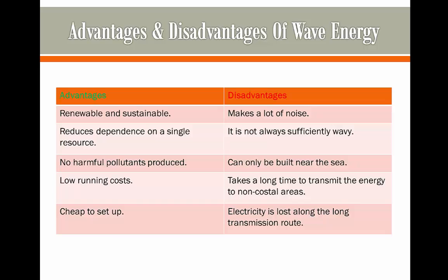However, there are quite a few disadvantages for wave energy. The first is that it makes a lot of noise and it's not always sufficiently wavy for it to work. It can only be built near the sea, which is a problem because you can't use it in remote areas that are landlocked. It also takes time to transmit energy to non-coastal areas — for example, if we're using this in Bournemouth to produce wave energy but want to transmit it all the way to London, it's going to take a long time. Electricity is also lost along the long transmission route, which is going to be very costly and not very efficient.